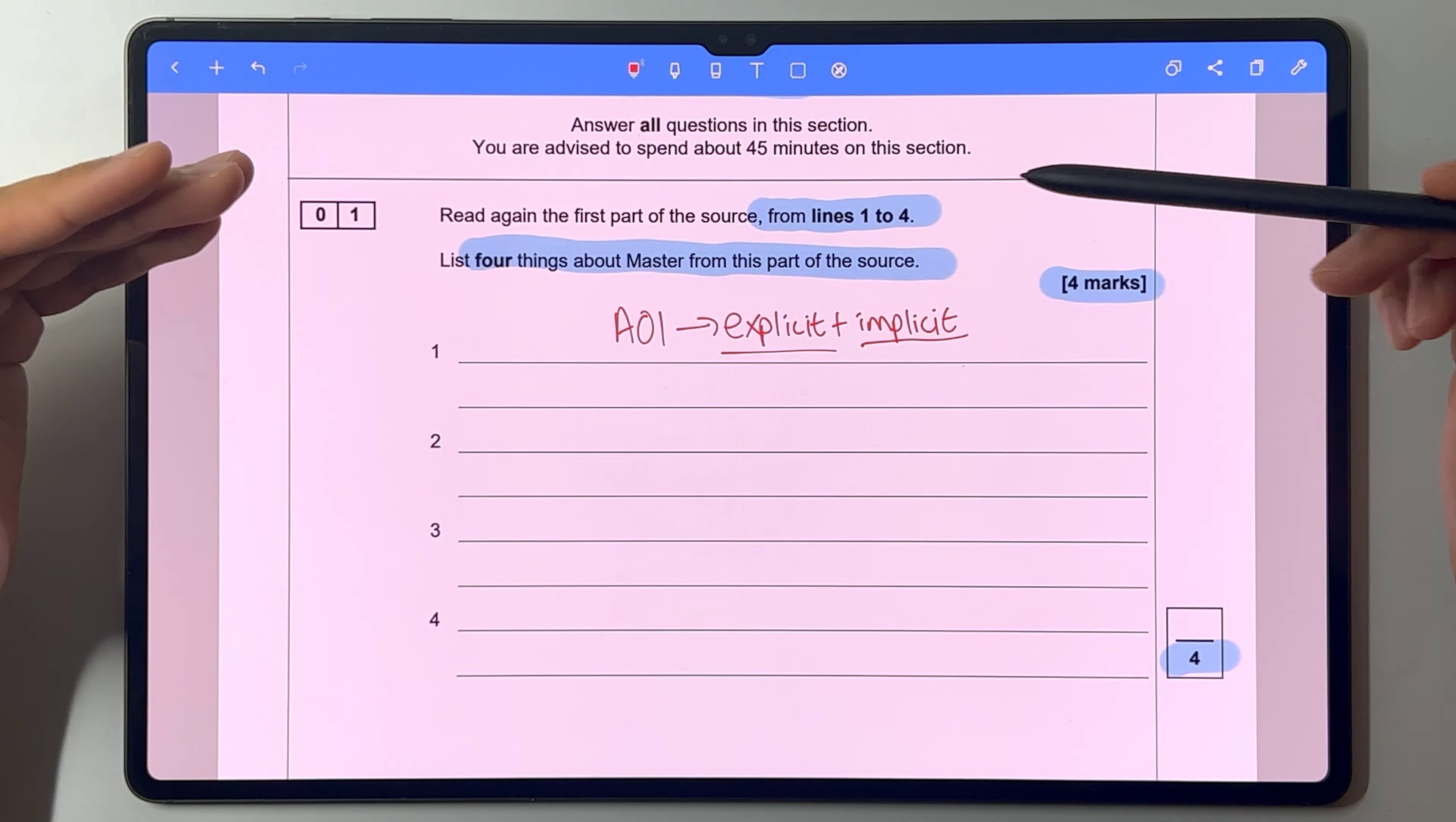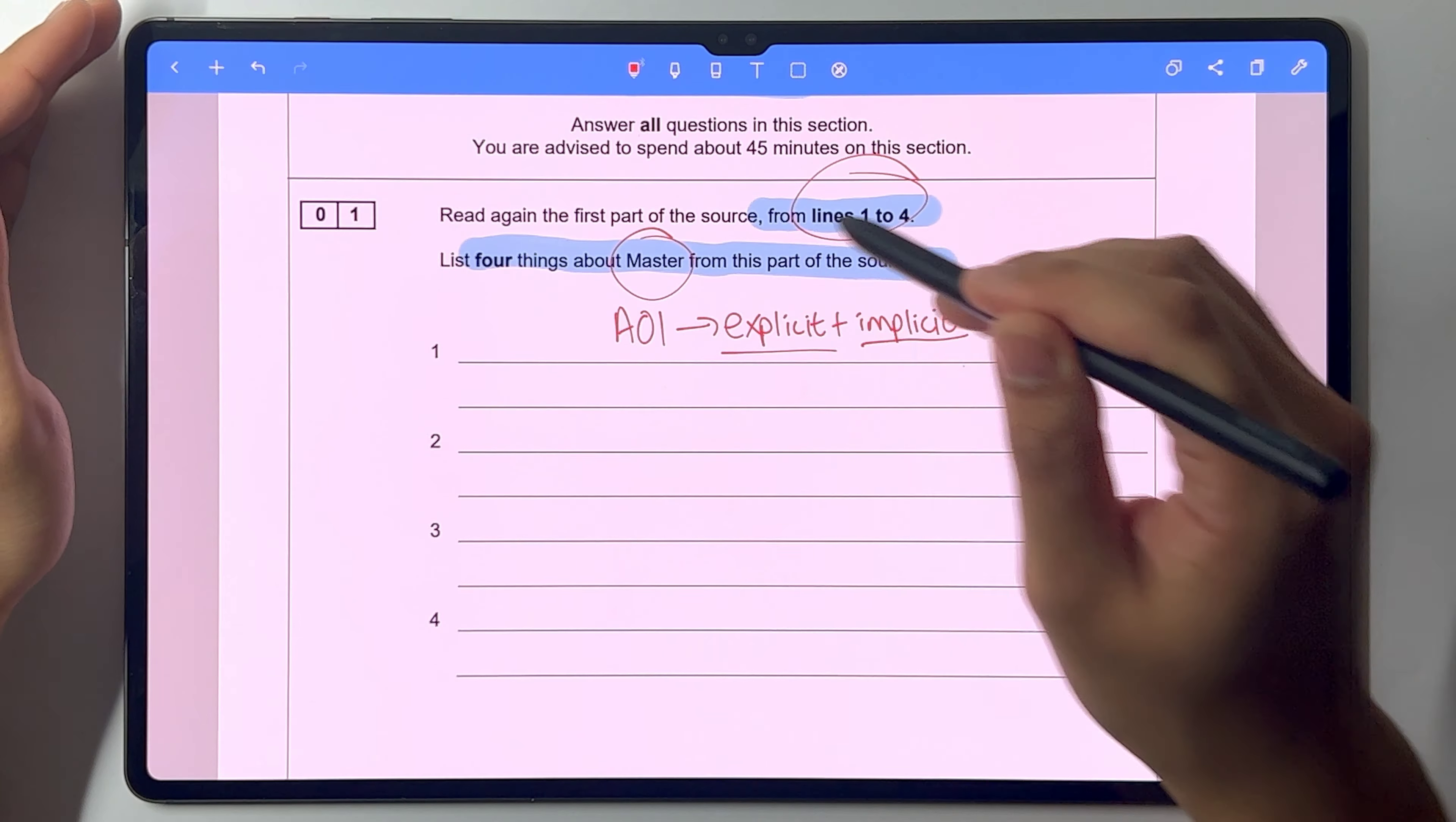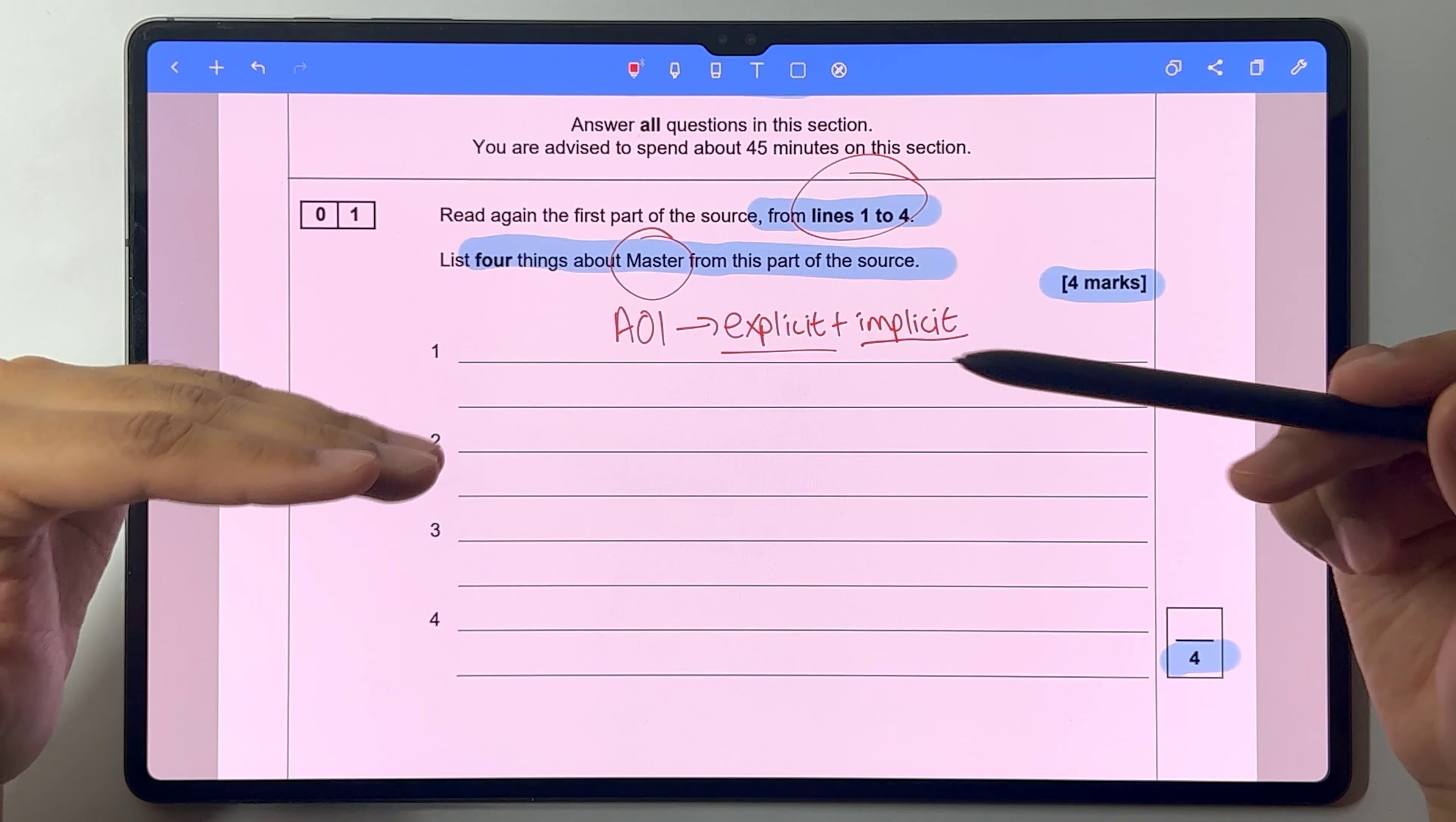So you need to look at the specific lines, which is lines one to four, and find four things about master. There's no need for you to analyse language or to analyse structure. It's four simple statements.